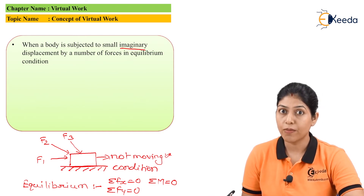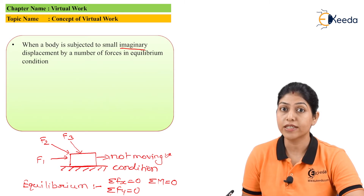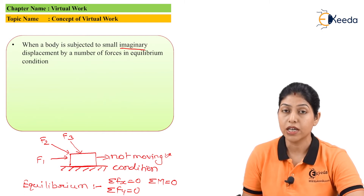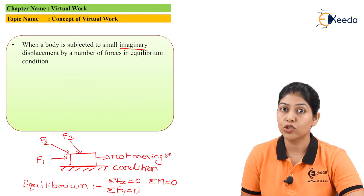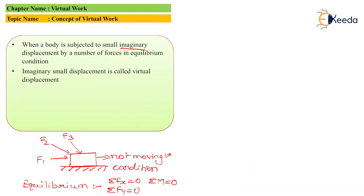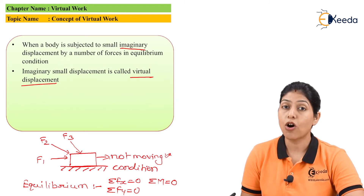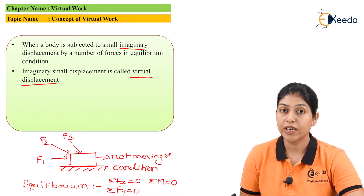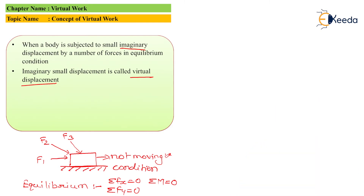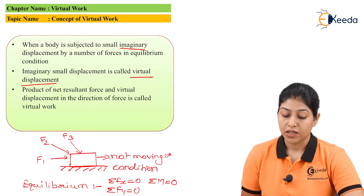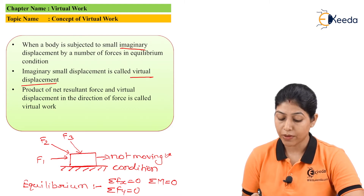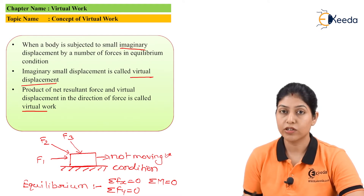We consider a small imaginary displacement of the body under the application of a number of forces in equilibrium condition. This small imaginary displacement of the body is called virtual displacement. On the basis of this virtual displacement, we can define the virtual work done by the body as the product of the net resultant force applicable on the body and the virtual displacement in the direction of force.